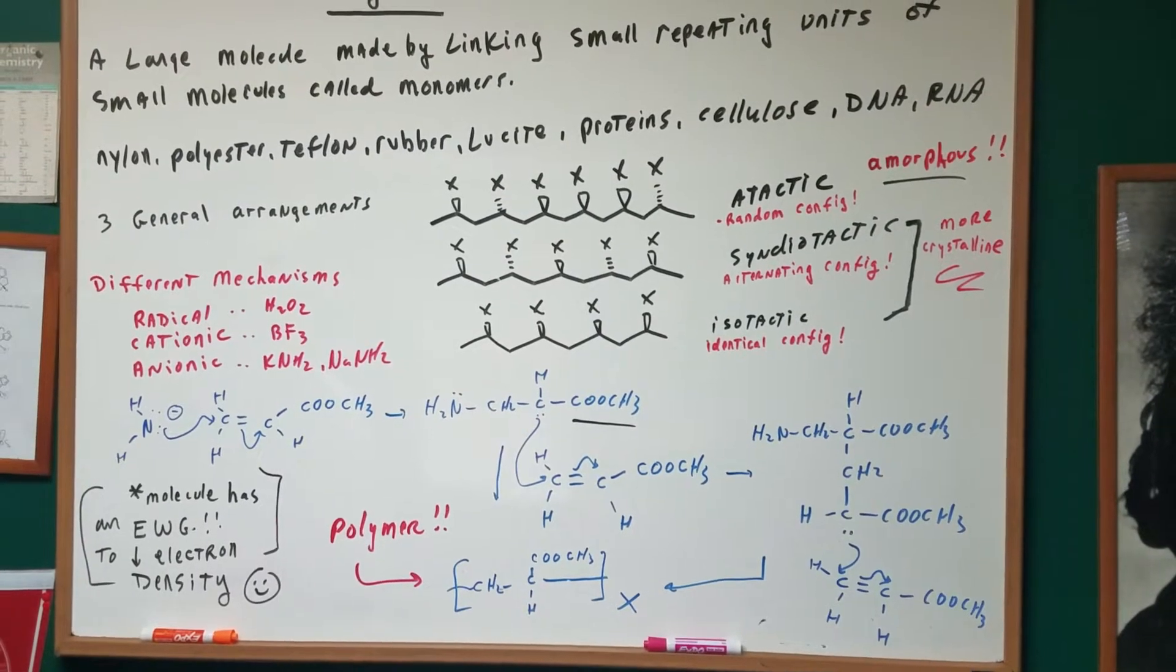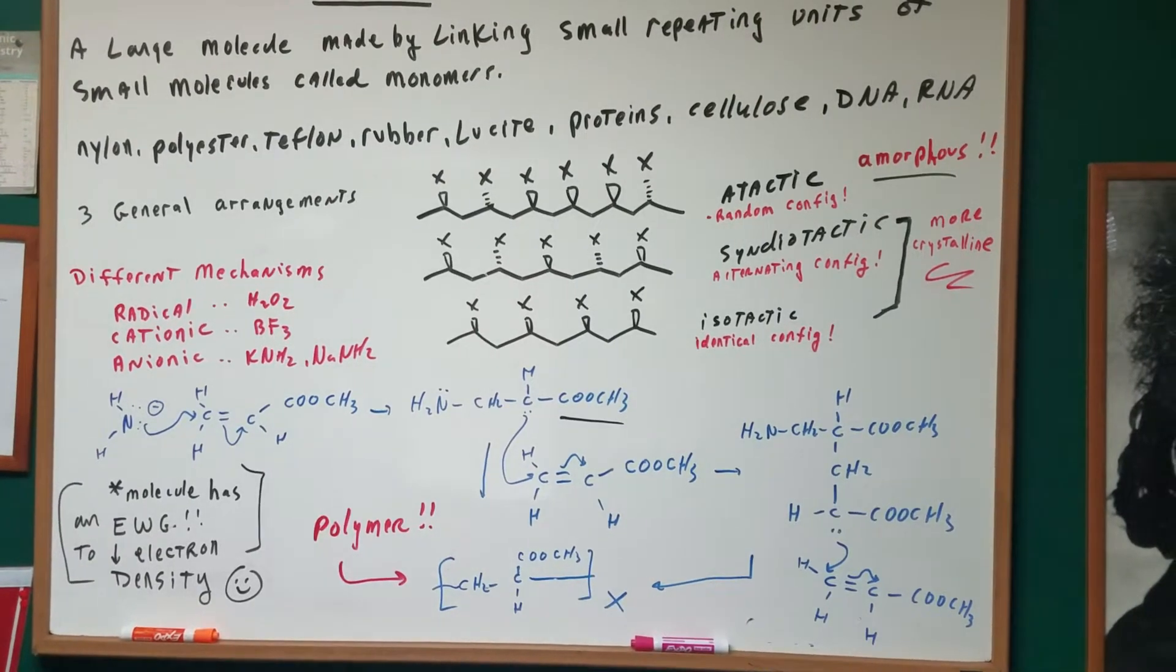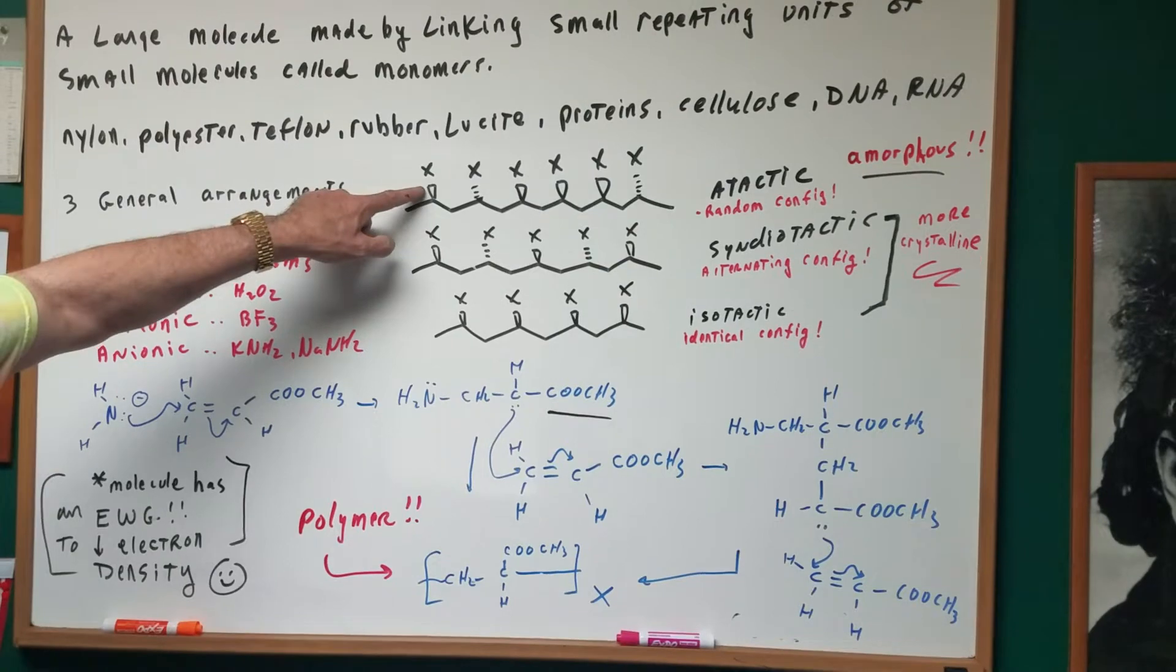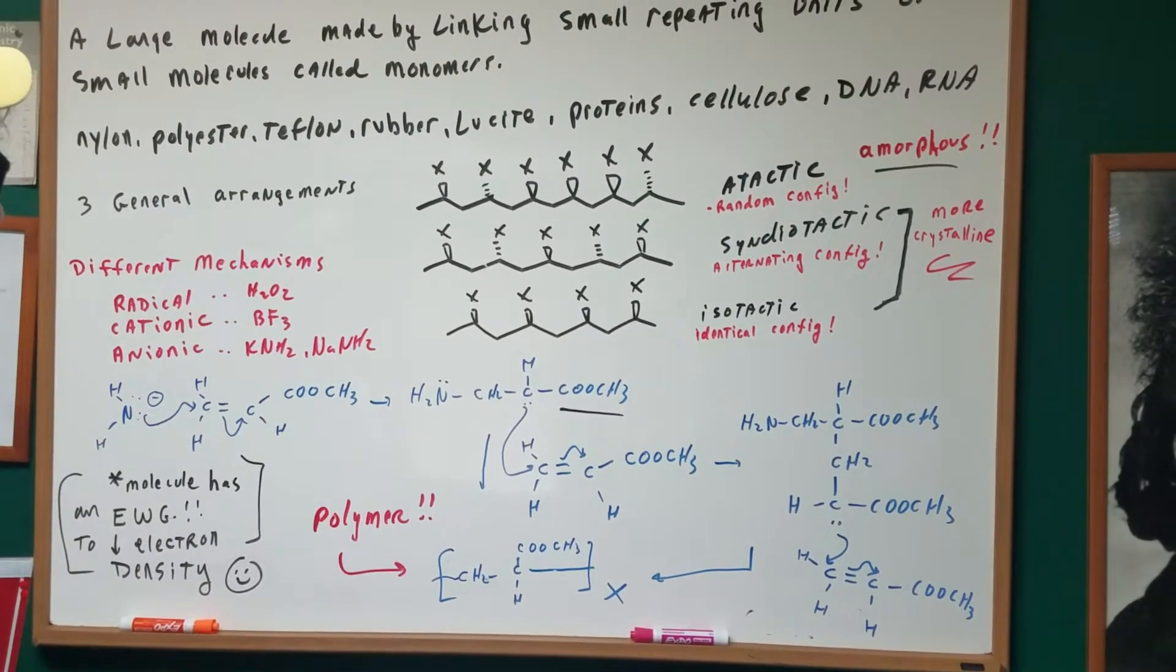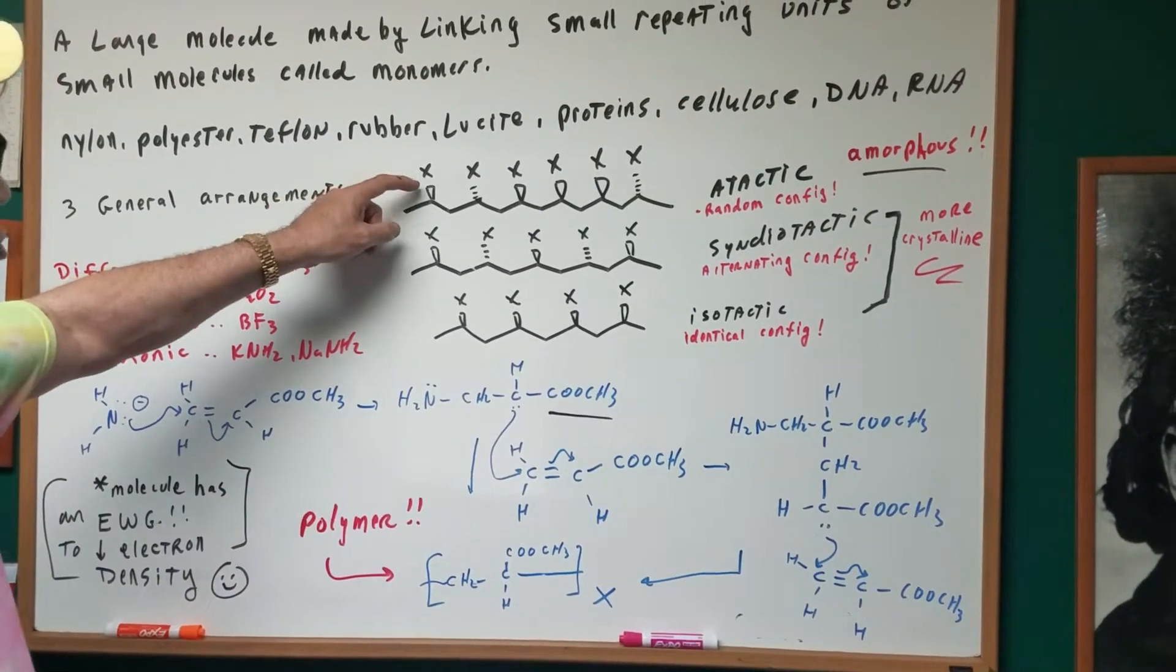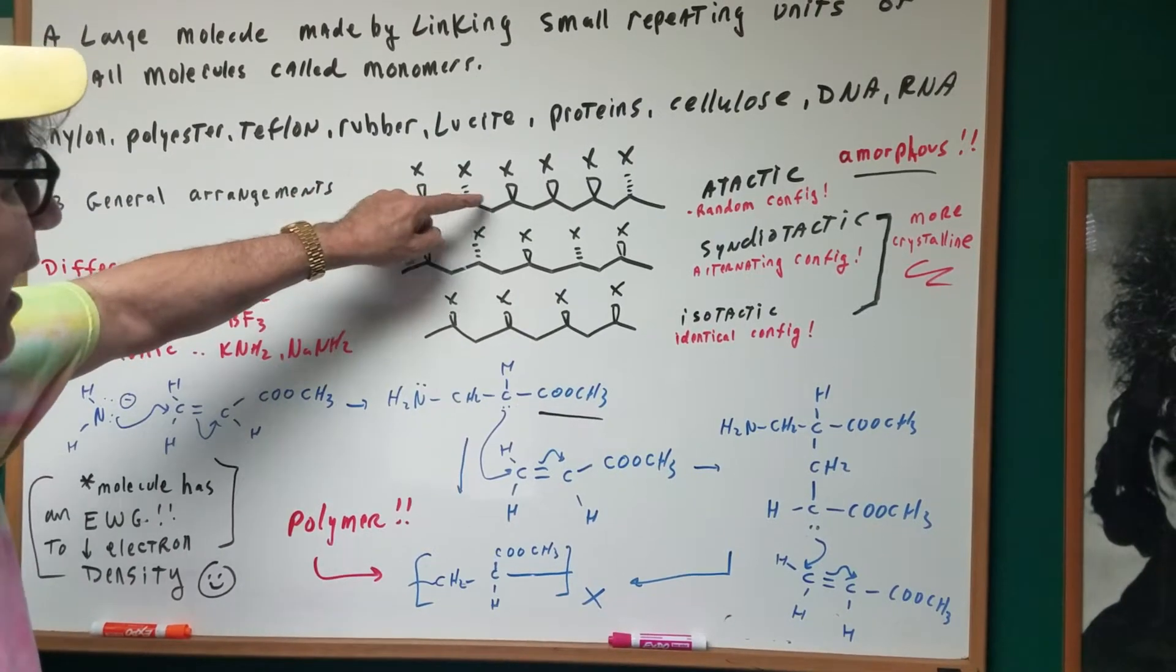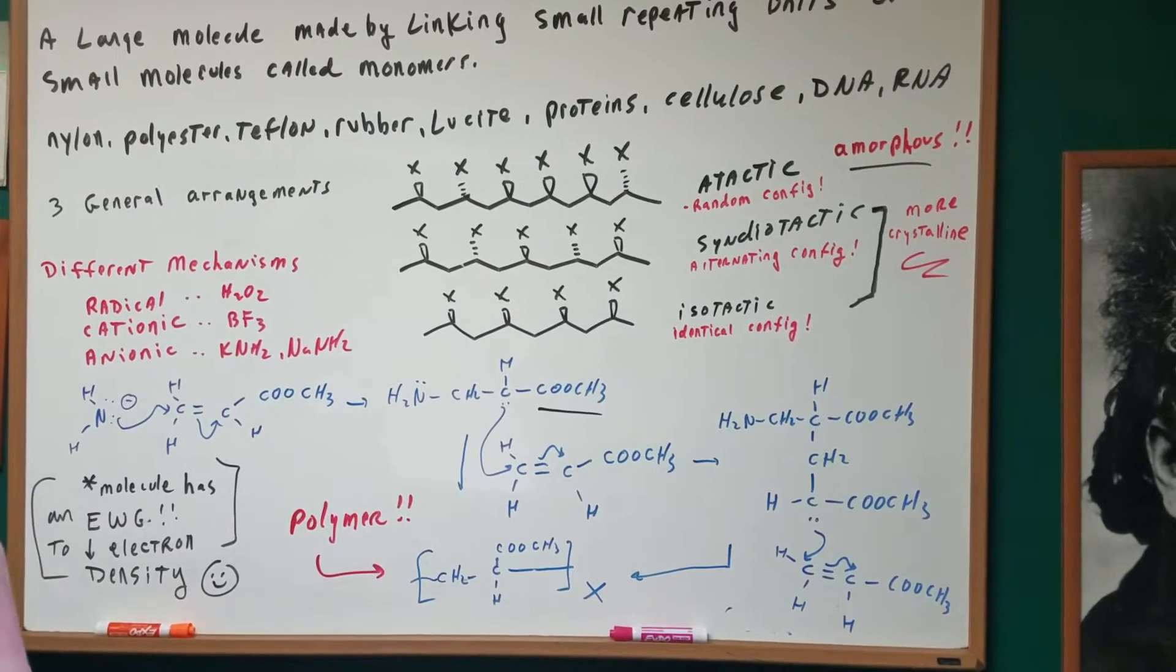If something is atactic, it's going to be amorphous, means it's not going to be crystalline, and we're going to have random configuration. For example, if X represents a group, say for instance it's a methyl group, or it could be an ester group, or a fluorine. Notice this means it's going up. So up, down, up, up, up. Notice there's no nice repeating unit. So it's random, it's atactic.